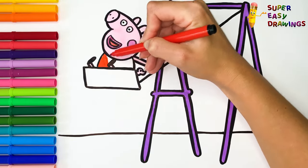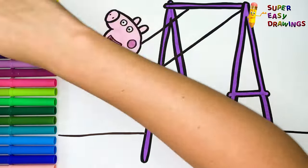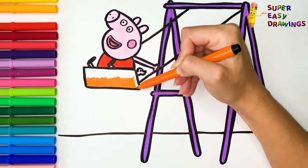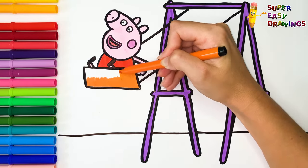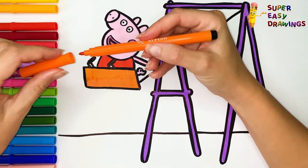I color her dress with this nice red marker. I use orange for the seat of the swing.